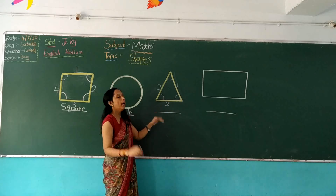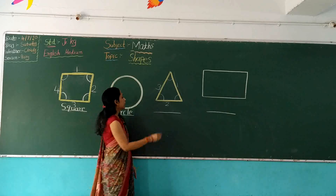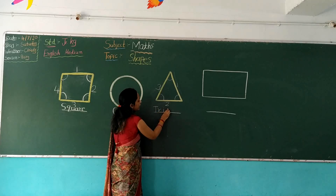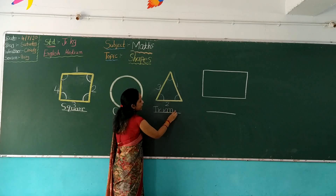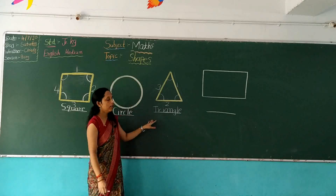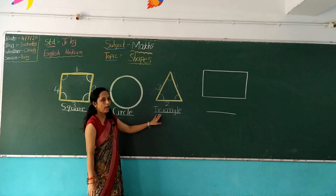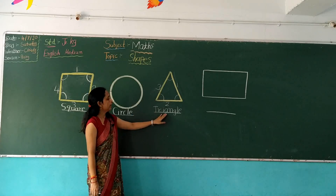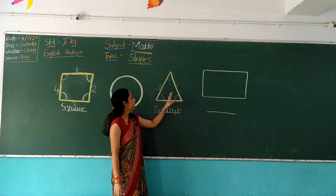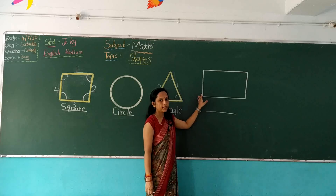One side is broad and the other side is narrow. It's like a mountain. T, R, I, A, N, G, L, E. Children, repeat with me. Which shape is this? This is a triangle. T, R, I, A, N, G, L, E. This is a triangle.